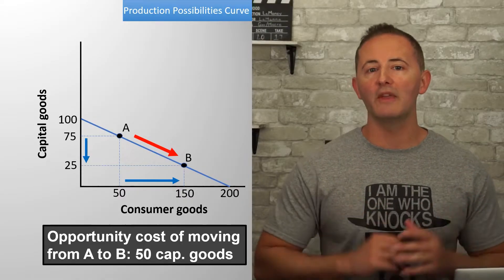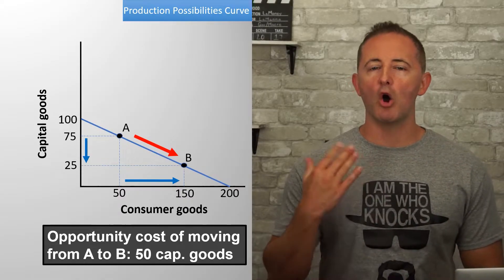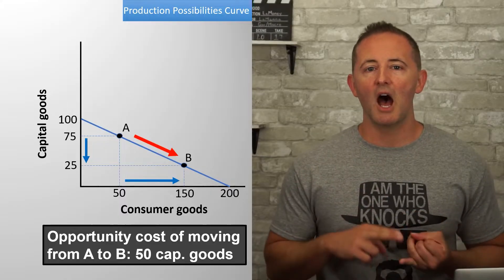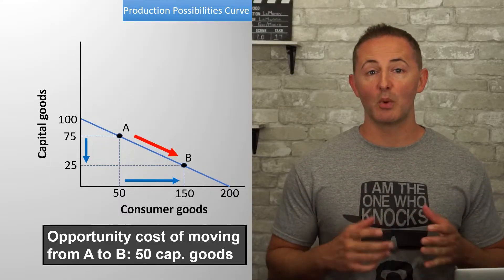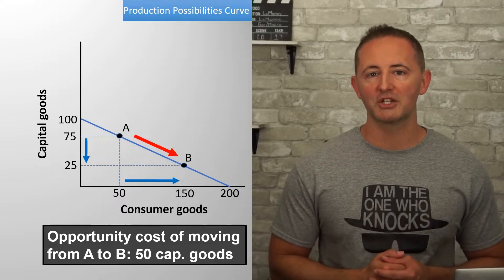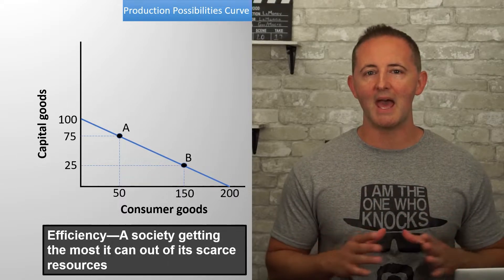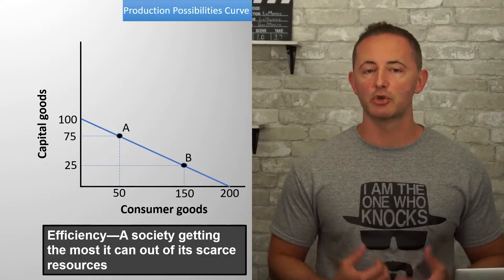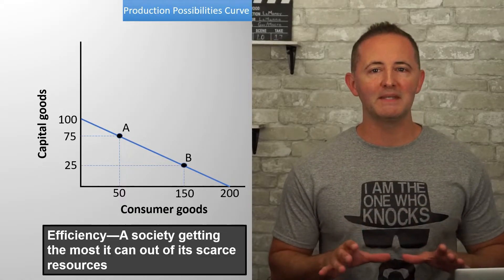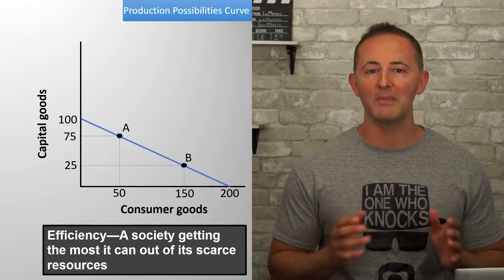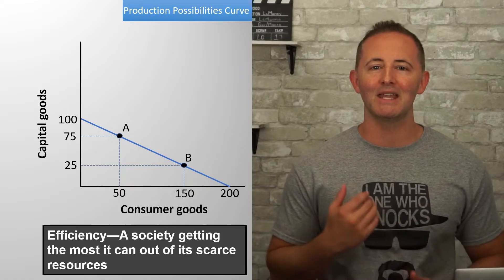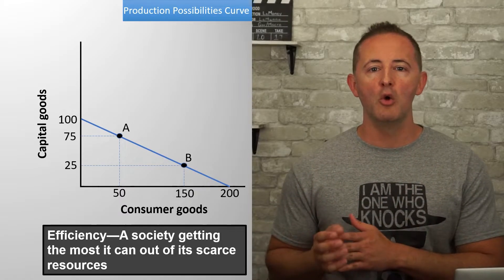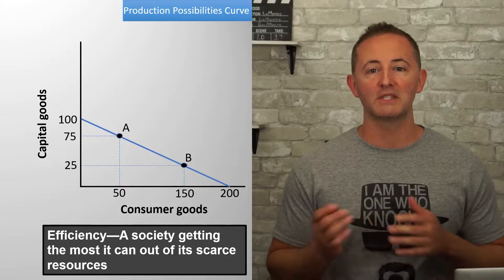So that's one thing the PPC does for us. But it also displays the concepts of efficiency, underutilized resources, as well as economic growth or contraction. Efficiency means society getting the most they can out of its scarce resources. On the PPC, any point along the curve is a point of efficiency, since it isn't possible to make more of one good without giving up some of the other.